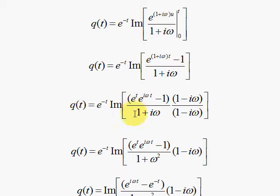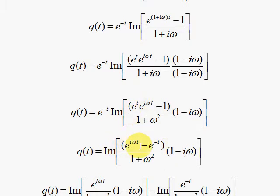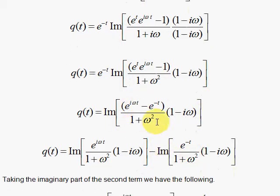I broke this up into two parts, so I could see E to the T and E to the I omega T. I bring that E to the minus T in to knock this off. When I bring that in, I get rid of the E to the T here, and over here I have E to the minus T. I still have I here, so I'm going to break this up into two parts: the imaginary part of the E to the I omega T with everything, minus the imaginary of E to the minus T with everything else.